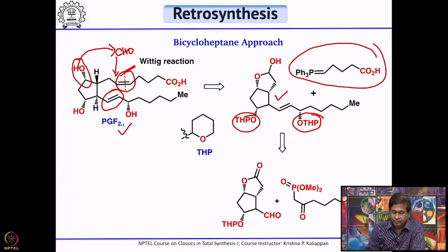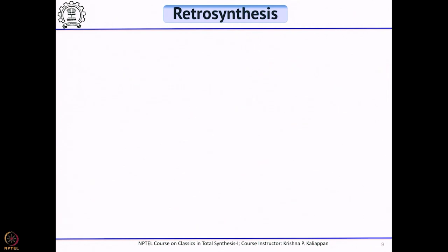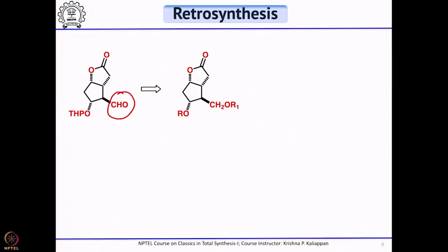The lactol can be obtained by DIBAL reduction of a lactone. If you have the corresponding aldehyde, this trans double bond can be obtained by Wadsworth–Emmons modification. A simple Wittig will give a cis double bond, while the Wadsworth–Emmons modification will give the trans double bond. The next step is how to get the bicyclic aldehyde. The aldehyde can be used as a protected form of the primary alcohol.